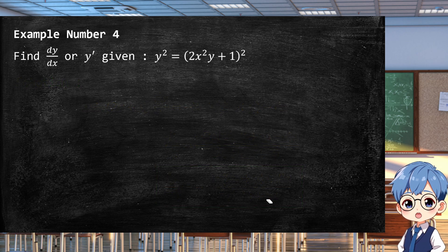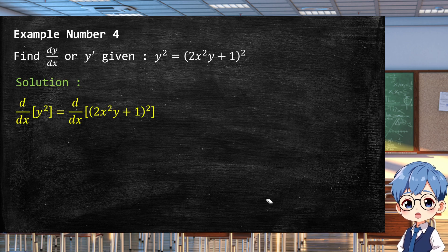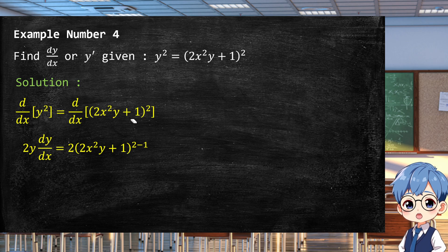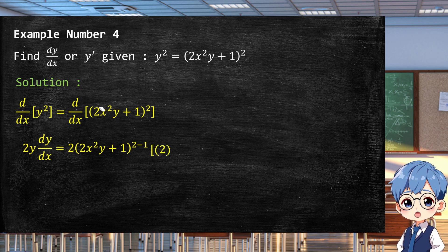Example four involves both chain rule and product rule. Applying d/dx, the derivative of y² is 2y·dy/dx. For the second term, we use chain rule: bring down the exponent 2, copy the base, subtract 1 from the exponent, and then multiply by the derivative of the inner function. The inner function contains x²y, so we apply the product rule.